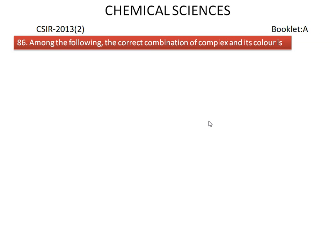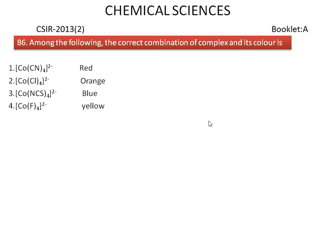Among the following, the correct combination of complex and its color is shown here. The central metal ion is the same but the ligands are different. The ligands are cyano, chloro, thiocyanato, and fluoro, and their corresponding colors are shown here.